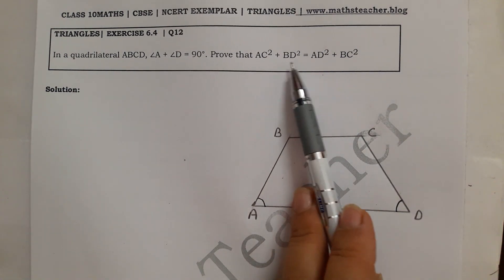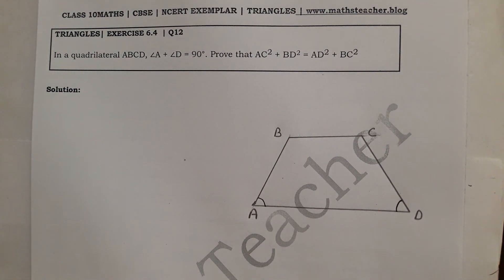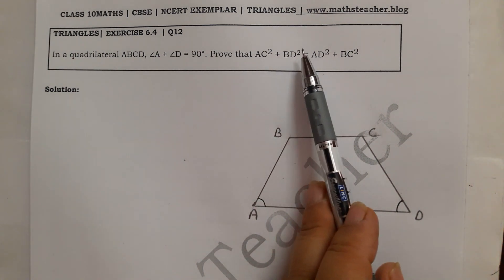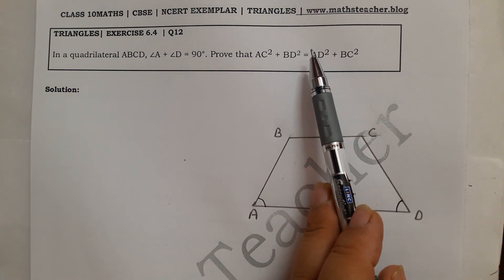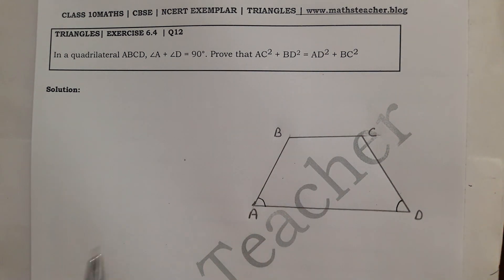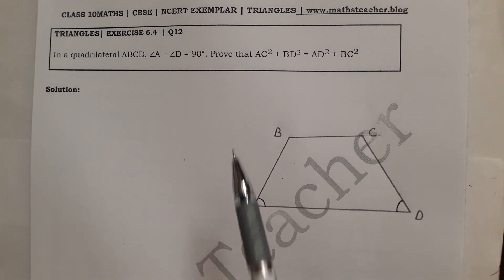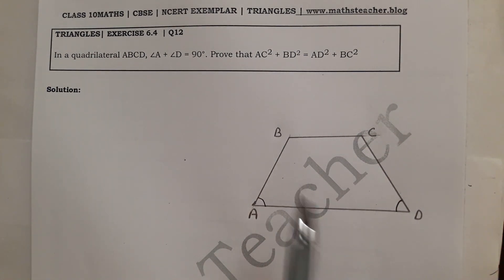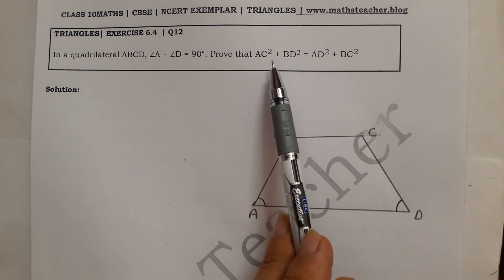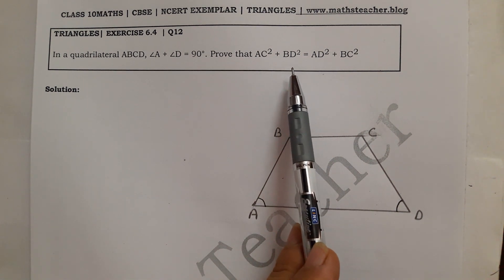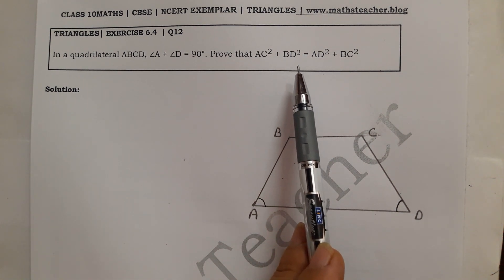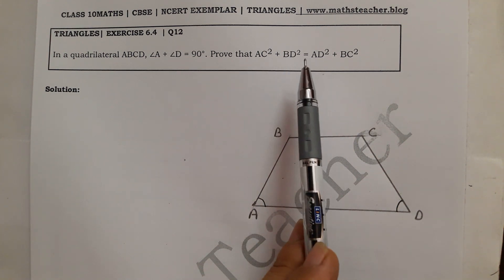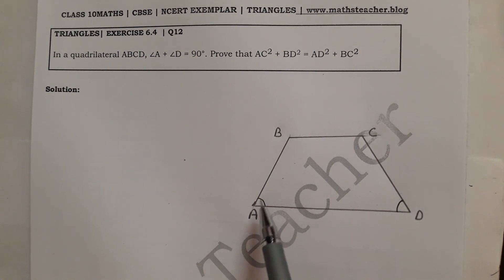Whenever you have a question involving sides squared, you can think of the triangle chapter and Pythagoras theorem. Because in a right angle triangle, hypotenuse² equals base² plus perpendicular². So the side squared approach applies here. Looking at the figure, angle A plus angle D equals 90 degrees.